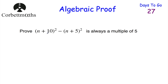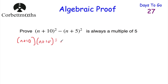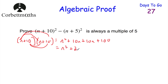Our first question says: Prove (n+10)² subtract (n+5)² is always a multiple of 5. If you want to try this question, press pause now. So to do this question, we've got a bracket squared, so I'm going to expand it. Remember that whenever you square a bracket, you're multiplying it by itself. So we've got (n+10) multiplied by (n+10). Expanding: n times n is n², n times 10 is 10n, 10 times n is 10n, and 10 times 10 is 100. When we simplify that, we get n² + 20n + 100.